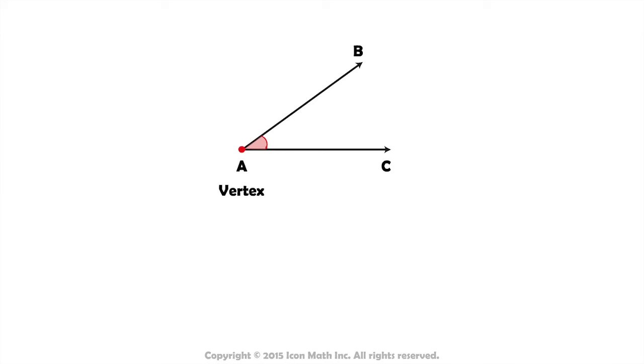We normally use the vertex name to refer to the angle, and we put this symbol to indicate an angle. This is called the short form of naming angles.